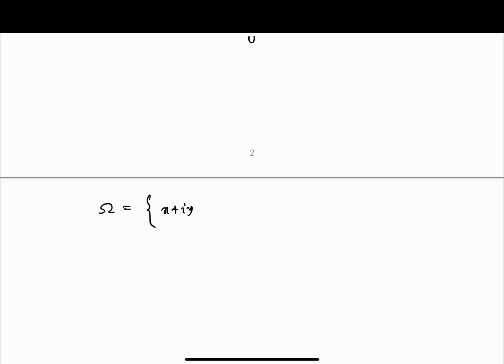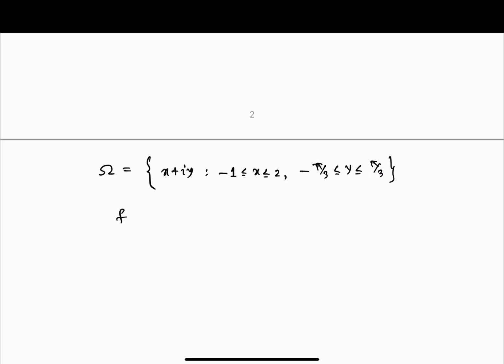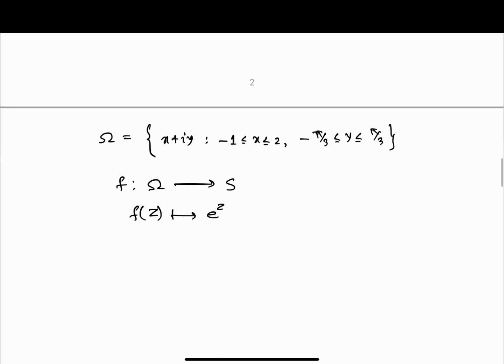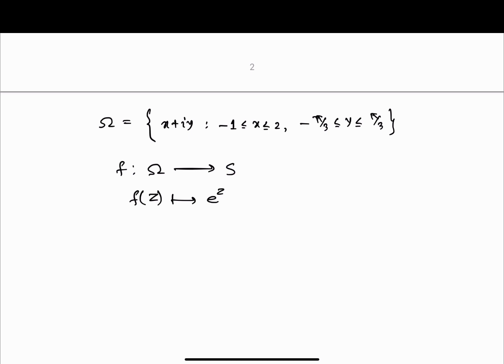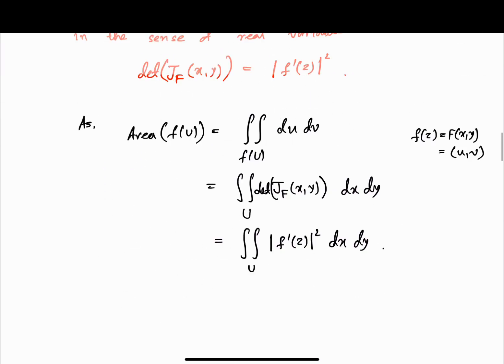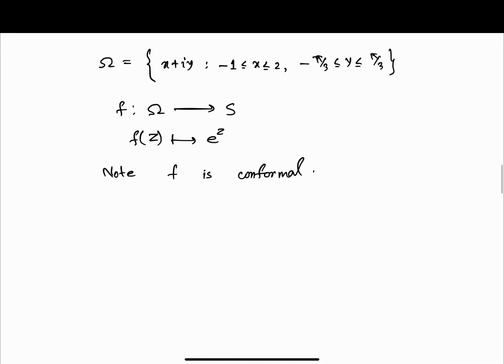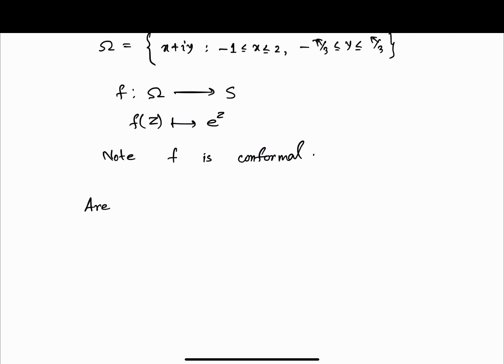Our region omega is given as x plus iy with x from minus 1 to 2 and y from minus pi by 3 to pi by 3. The map f sends omega to S where f(z) = e to the power z. Note this map is conformal because its derivative is non-zero everywhere. Therefore we can use the area formula: area of S equals area of f(omega) equals the double integral over omega of the Jacobian determinant dx dy.